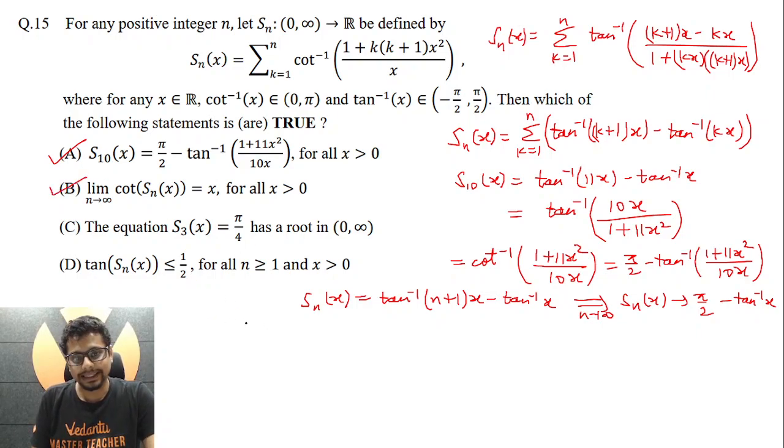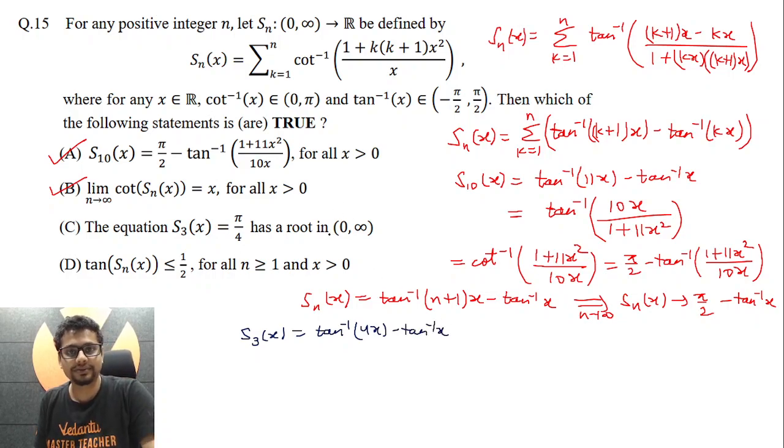Now coming to option C, S_3(x). S_3(x) essentially will be tan inverse 4x minus tan inverse x. Again, x we are considering as positive. We are looking for positive root of x. So for this to be equal to pi by 4, if you take tan on both sides, you essentially get 3x by (1 plus 4x square) equal to 1.